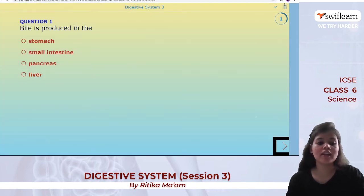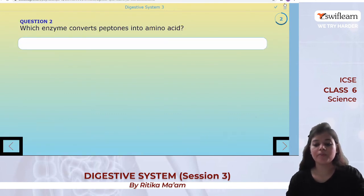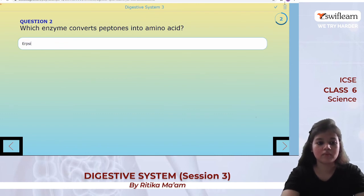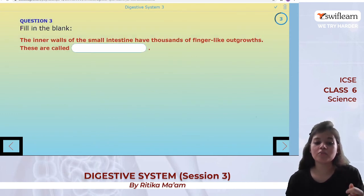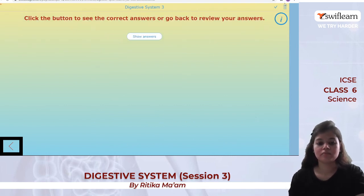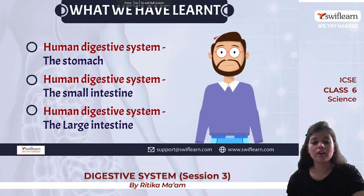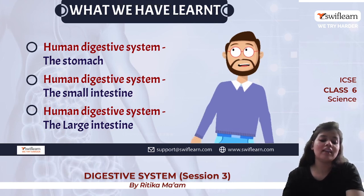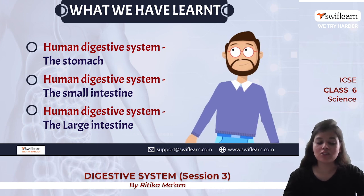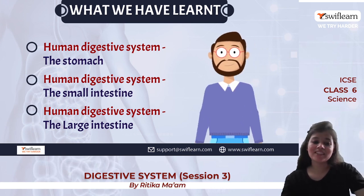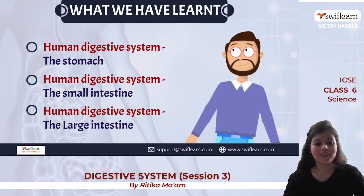In the activity review: bile is produced in the liver. The enzyme erepsin converts peptones into amino acids. The finger-like outgrowths on the inner walls of the small intestine, known as villi, make absorption easy. We have covered the stomach, small intestine, and large intestine. If you missed any video, visit the Swift Learn channel. Book your free trial class, and keep revising and learning. Thank you very much!